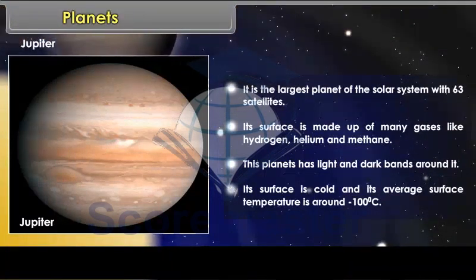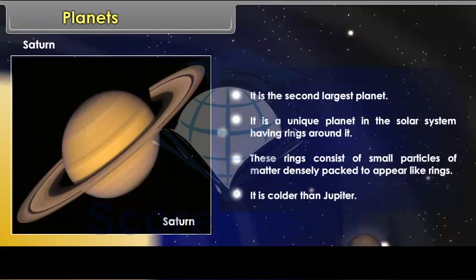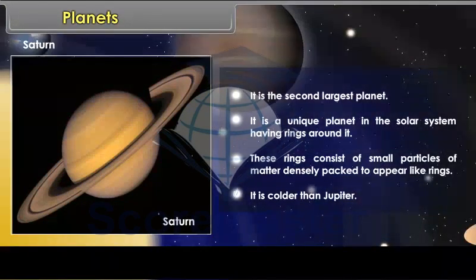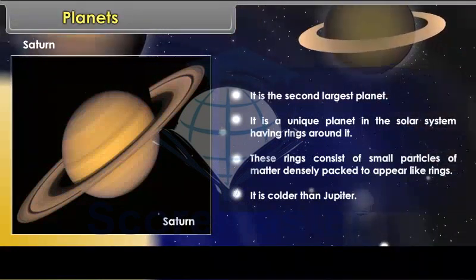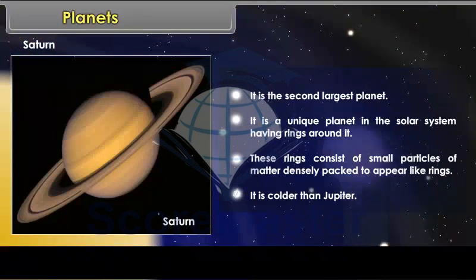Saturn. It is the second largest planet. It is a unique planet in the solar system having rings around it. These rings consist of small particles of matter densely packed to appear like rings. It is colder than Jupiter.